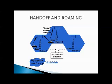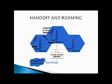Handoff and roaming: to maintain communication between two parties in the presence of mobility, handoff is required. For example, when a mobile user is engaged in a conversation, the mobile station is connected to the base station via radio link. If the mobile user moves to the coverage area of another base station, the radio link to the old base station is disconnected and a new radio link with the new base station is established. This switching of an ongoing communication from one cell frequency to a different cell frequency is called handoff. Roaming is when a user moves from one PCS system to another PCS system.